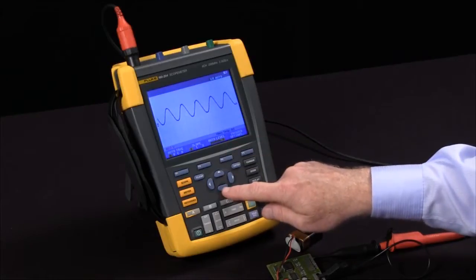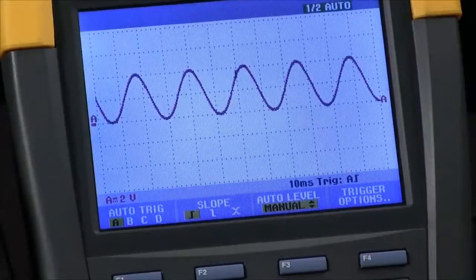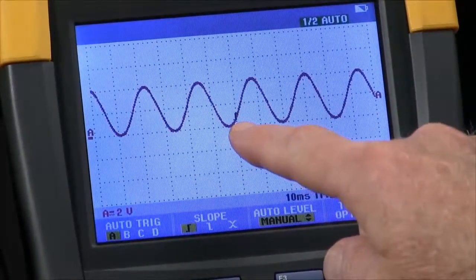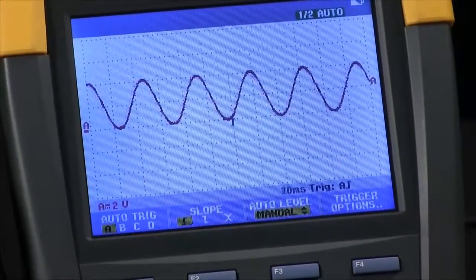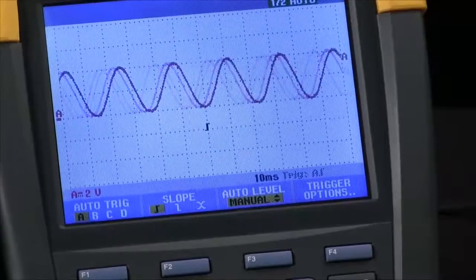If I use my arrow keys to reduce that level, you'll note that the waveform shifts a little bit left and right. I'm now triggering near the bottom of the waveform. If I come outside of the waveform, I'll lose sync and things will no longer be stable.